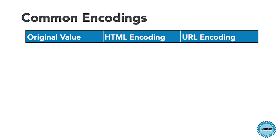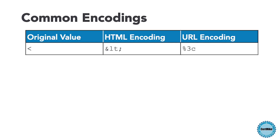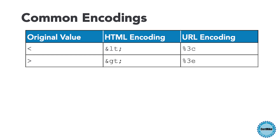There are some very common values that we want to output encode. The less than symbol, used in HTML tag-based attacks such as cross-site scripting, is HTML encoded as &lt; and URL encoded as %3C. While the greater than symbol is HTML encoded as &gt; and URL encoded as %3E.